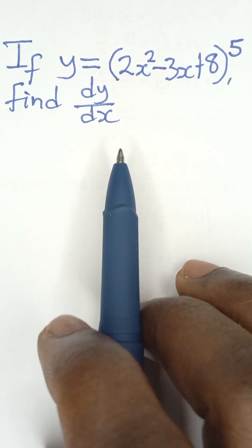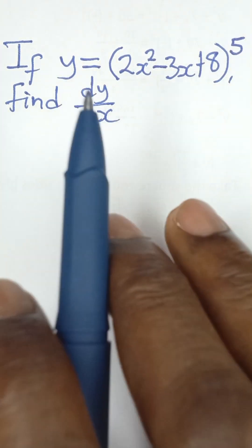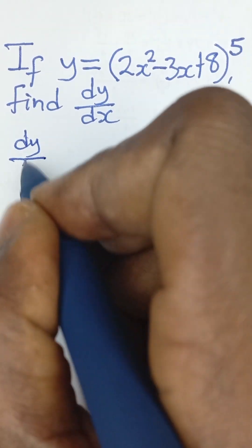Now, for us to find dy/dx, what we just need to do here is to apply chain rule. And the simple trick for chain rule is to say that dy/dx...